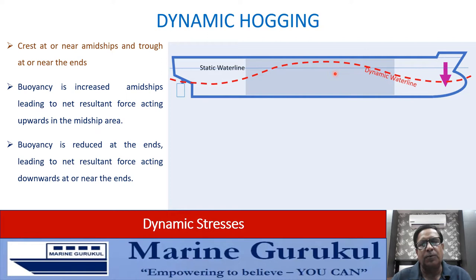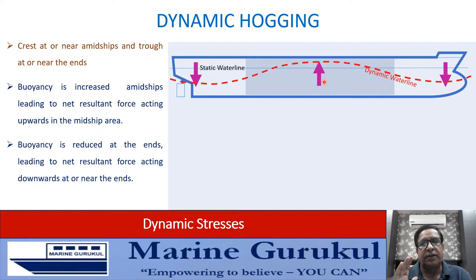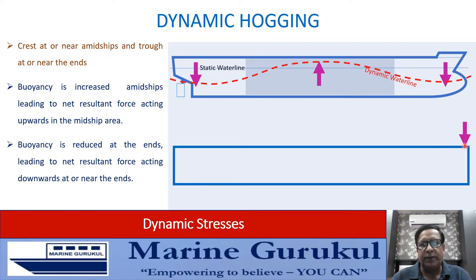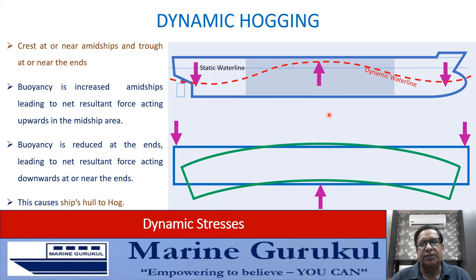The resultant force amidships becomes upward and at the ends it becomes downward. We have a resultant downward force at the ends and a resultant upward force amidships, caused by varying buoyancy along the length due to the wave's crest and trough positions. When represented as a beam with downward forces at the ends and upward force amidships, this causes the vessel to bend with the midship region bending upwards — causing the vessel to hog.